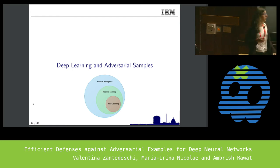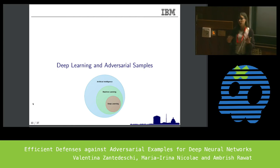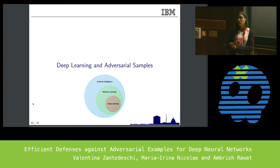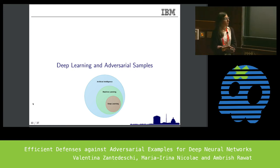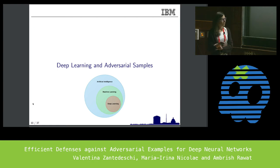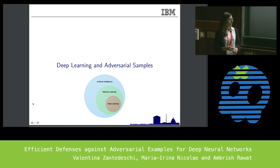In order to understand why these machine learning models are affected by these vulnerabilities, we need to go into the details of how the models work. We are going to focus on deep learning models, which are a subset of machine learning models. They are well known for their performance in image recognition, but also because of their complexity they are probably most vulnerable to adversarial attacks.